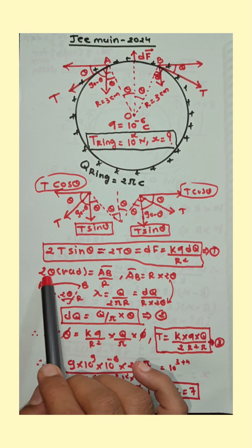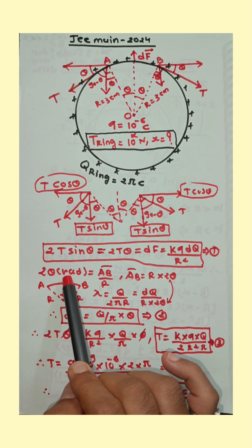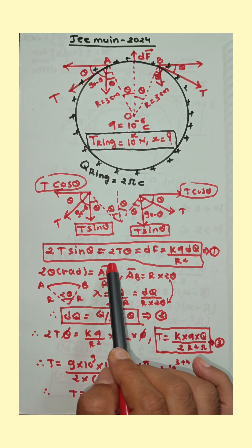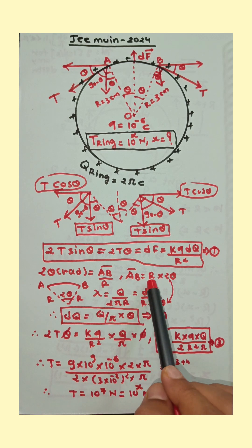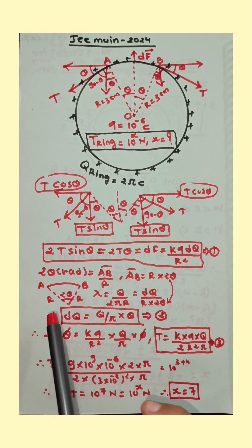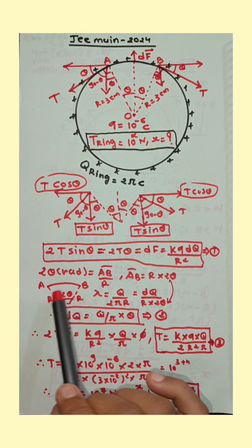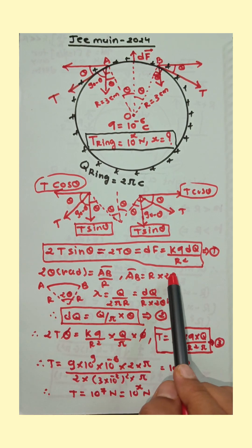Now angle 2 theta is small and measured in terms of radian, then angle is equal to arc AB upon radius. So AB is equal to r into 2 theta. Here see 2 theta is equal to AB upon r. So AB is equal to r into 2 theta.